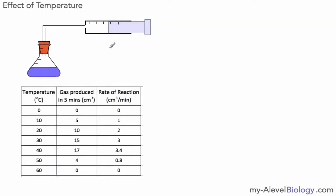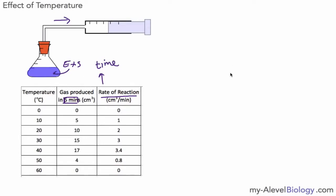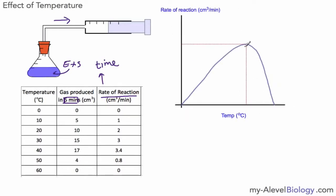So imagine we were measuring gas produced: we've got enzyme plus substrate, gas being collected over a five-minute interval, and we're doing this at different temperatures — starting at zero degrees and going up to 60 degrees in intervals of 10 degrees. We then convert that into a rate of reaction, which always involves an amount and a time. We change gas produced in five minutes to centimetres cubed per minute by dividing by five.